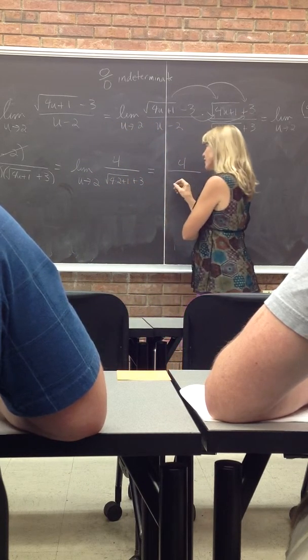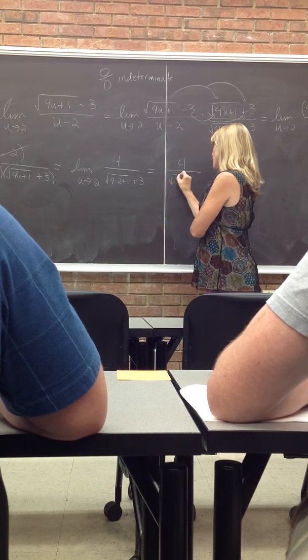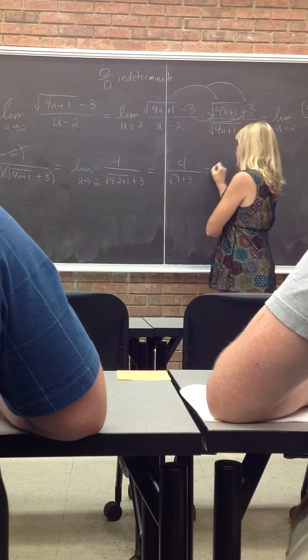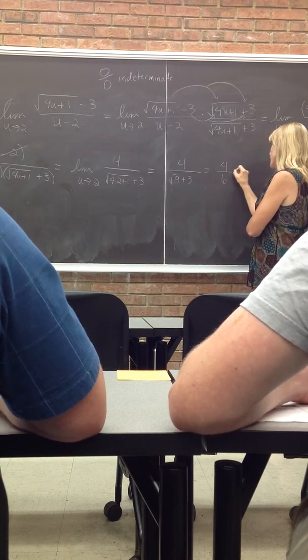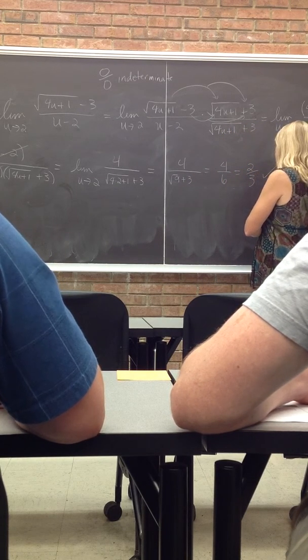So I'll get 4 in the numerator and I will get the square root of 9 plus 3 which will be 4 over 6. And that reduces to 2 thirds.